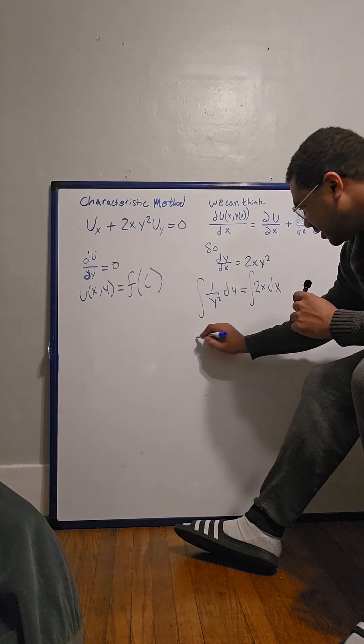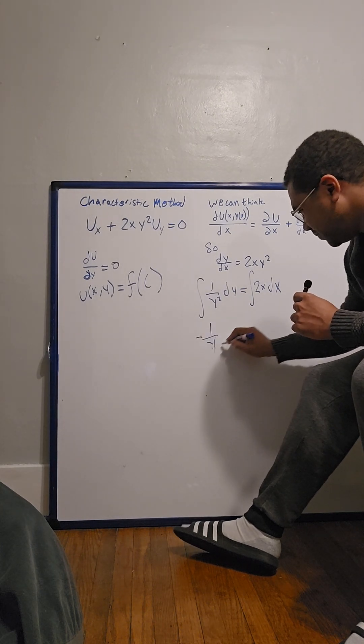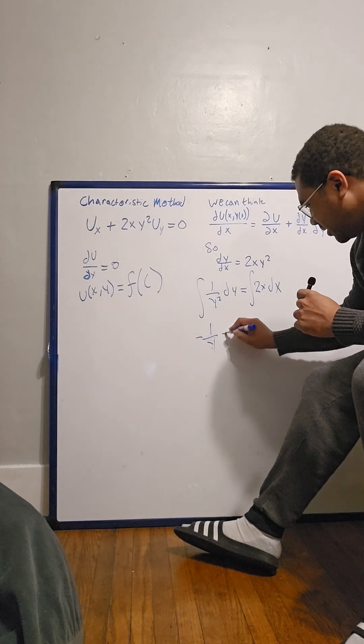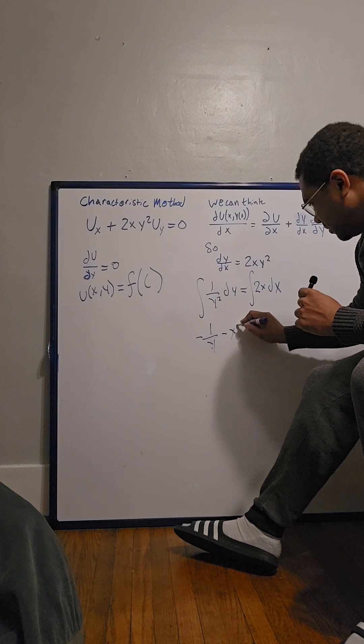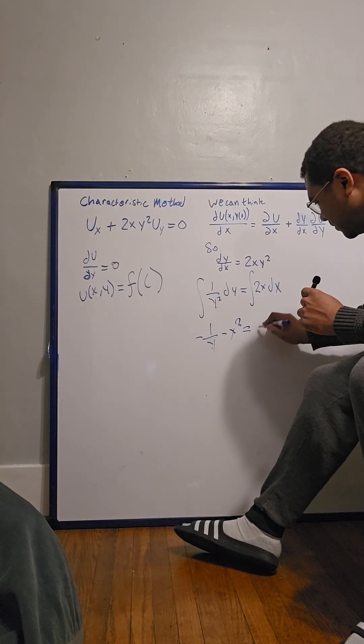We get negative one over y minus x squared equals c.